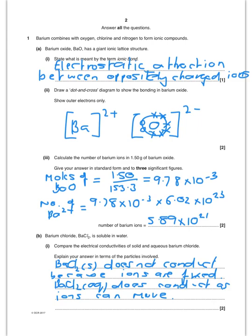And then just on this page, barium chloride is soluble in water. Compare the electrical conductivities of solid and aqueous barium chloride. Well, barium chloride solid will not conduct because the ions are in fixed positions. But as you'll remember, barium chloride when dissolved in water will conduct because the ions can now move.